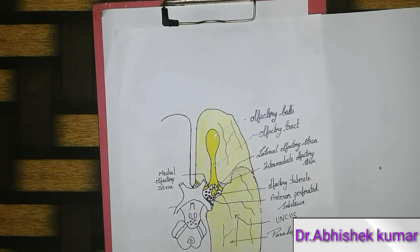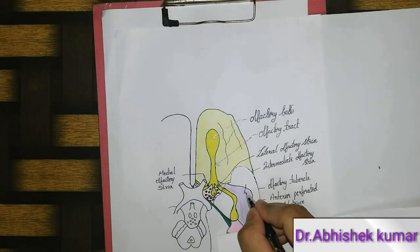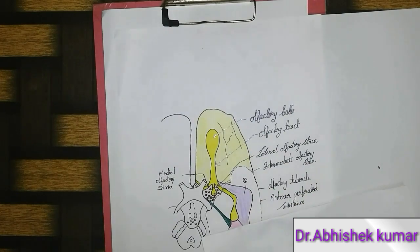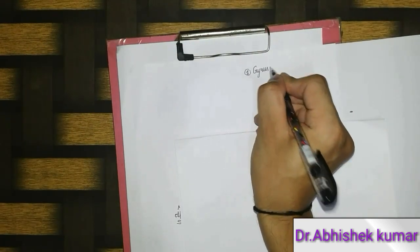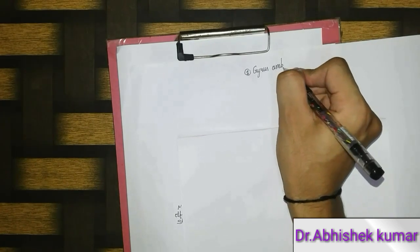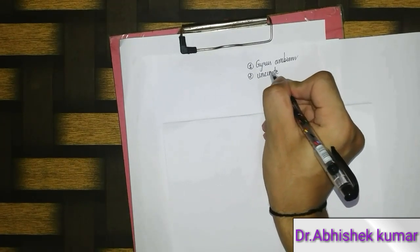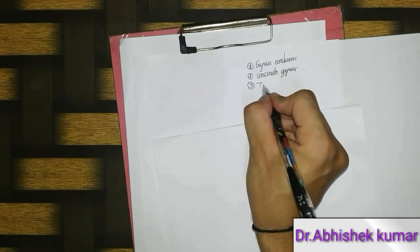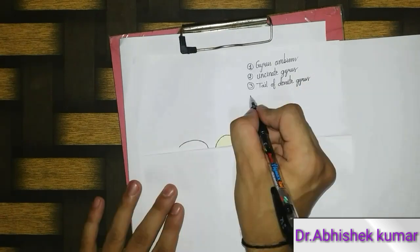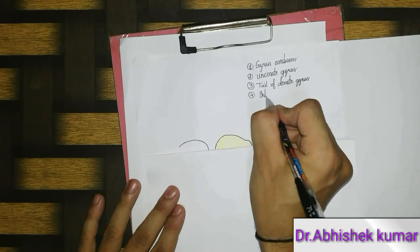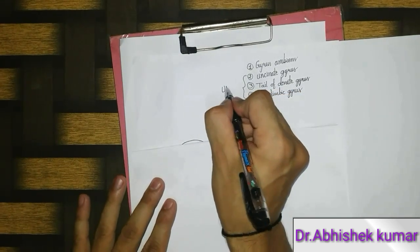This is the anterior aspect of the base of the brain. Now this one is the posterior inferior aspect — the inferior aspect of the base of the brain. Here I am labeling: number one is gyrus ambiens, number two is uncinate gyrus, number three is tail of dentate gyrus, number four is intralimbic gyrus. Numbers two, three, and four together are called the uncus.